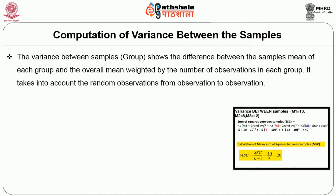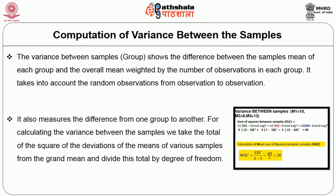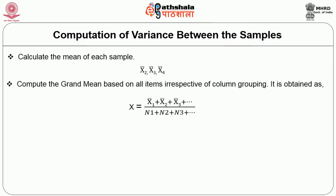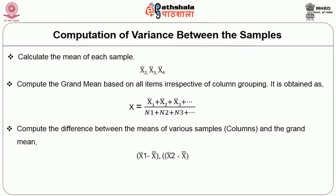The variance between samples shows the difference between the sample mean of each group and the overall mean, weighted by the number of observations in each group. It also measures the difference from one group to another. For calculating the variance between samples, we take the total of the squares of the deviations of the means of various samples from the grand mean and divide this total by degrees of freedom. First, calculate the mean of each sample: X̄₁, X̄₂, X̄₃, X̄₄, etc. Then compute the grand mean: X̄ = (X̄₁ + X̄₂ + X̄₃) ÷ (N₁ + N₂ + N₃). Then compute the difference between each sample mean and the grand mean: (X̄₁ − grand mean), (X̄₂ − grand mean), etc.